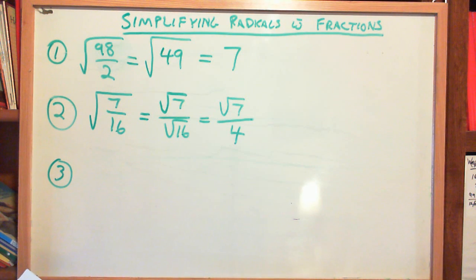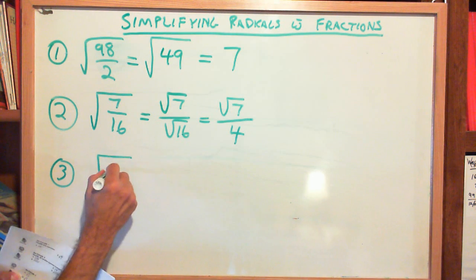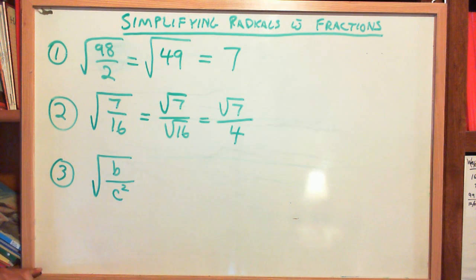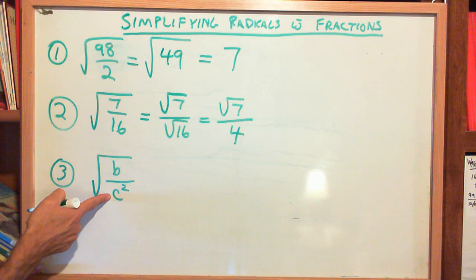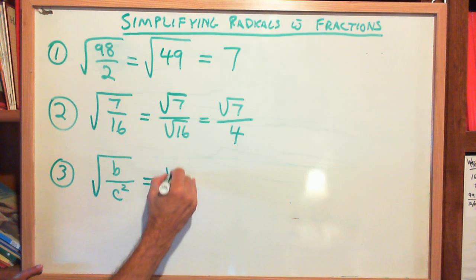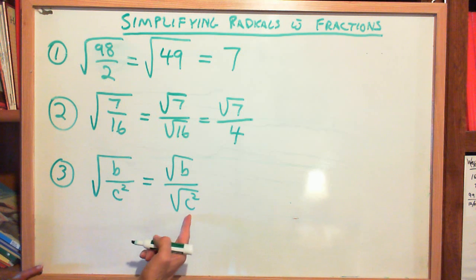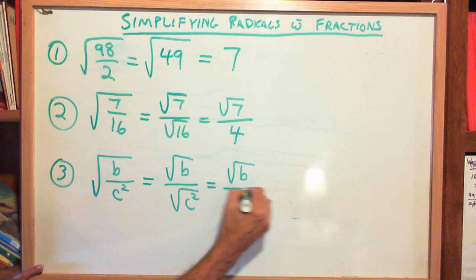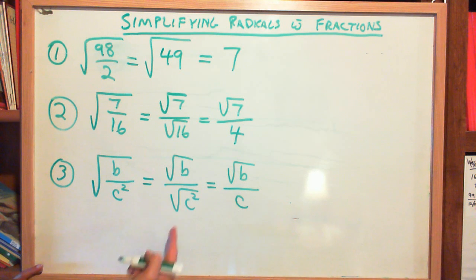Example 3: the square root of b over c squared. Is b a perfect square? No. Is c squared a perfect square? Yes. So I'm going to separate them: the square root of b over the square root of c squared. The square root of c squared is c, so I get the square root of b over c.